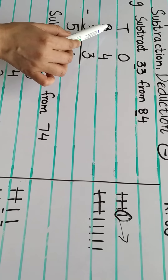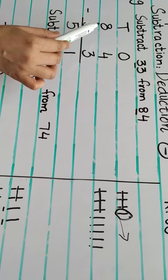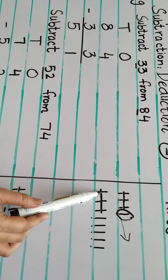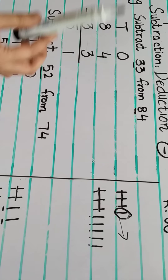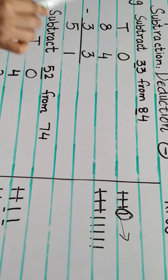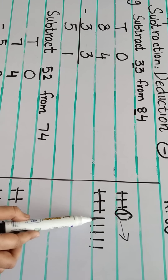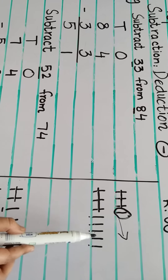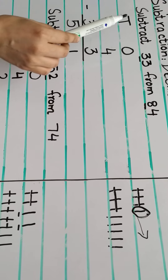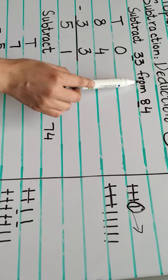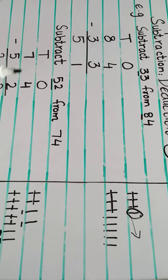And then the tens column — the first number is 8. We will subtract 3. Draw 8 lines: 1, 2, 3, 4, 5, 6, 7, 8. We are going to take away 3: 1, 2, 3. Count the ones left: 1, 2, 3, 4, 5. So when we subtract 33 from 84, the answer will be 51.